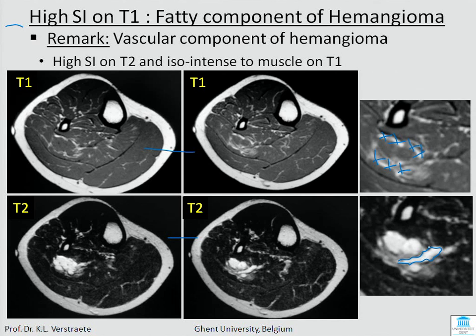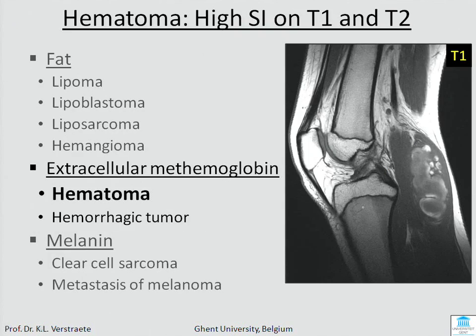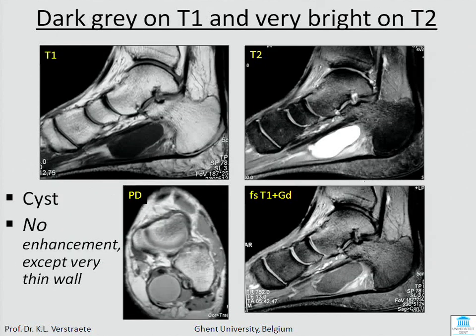This patient has a mass in the calf with high signal intensity at the periphery of the lesion and dark areas in the center. This is typical for a hematoma — the extracellular methemoglobin has high signal intensity on T1. Another easy one: low signal intensity on T1, very bright on T2, and with gadolinium you see only a little enhancement of a very thin wall. This is a cyst.